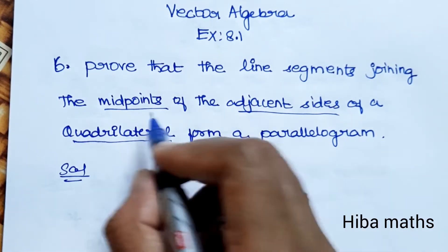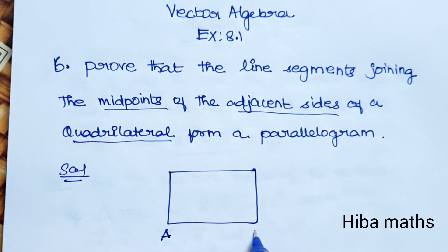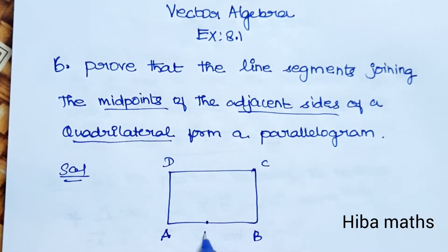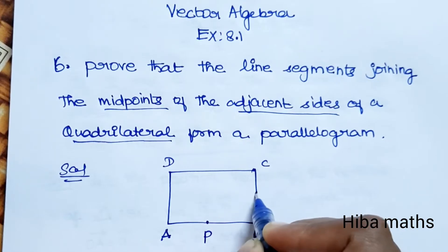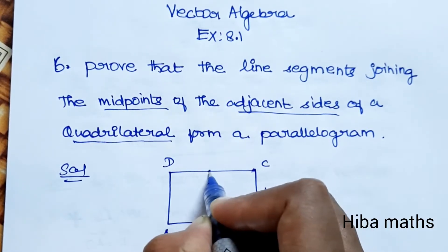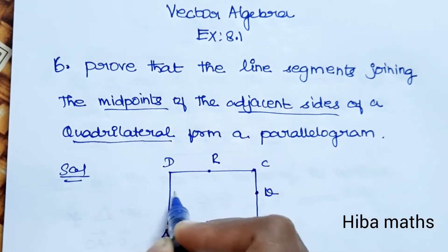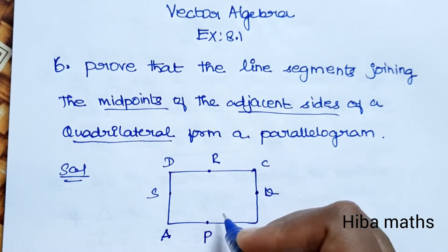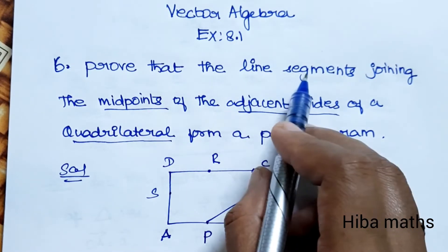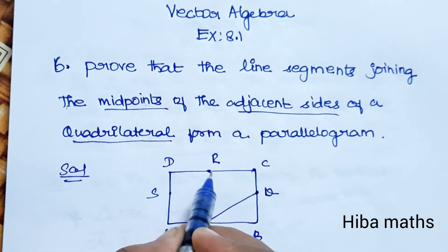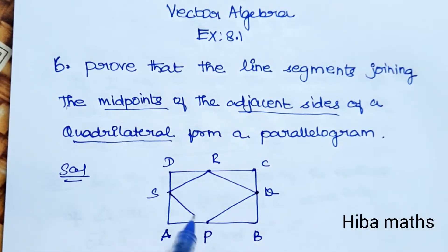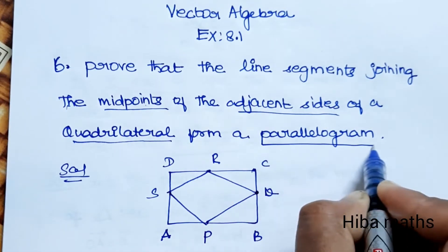The adjacent sides have midpoints. The quadrilateral has vertices A, B, C, D and the midpoints of the adjacent sides are P, Q, R, S. Joining these midpoints in the diagram forms a parallelogram PQRS.